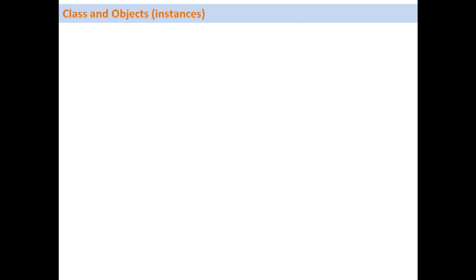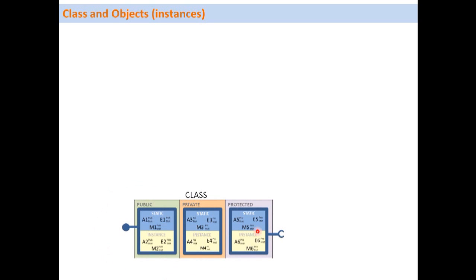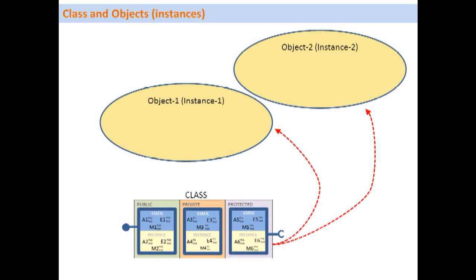Let's look at how we can create several objects from a class. We have a class with public, protected, and private sections, and both static and instance components. In the program code we use the statement 'CREATE OBJECT' to create several instances from this class — each instance is called an object. We can create any number of objects, such as object one, object two, and so on.